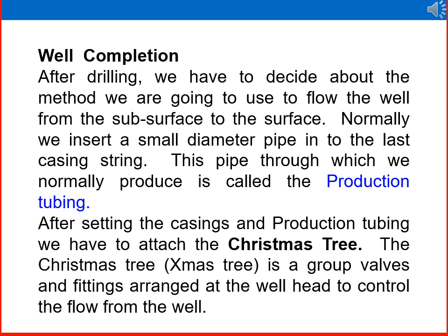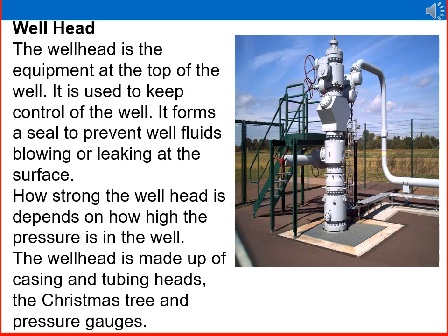The Christmas tree — sometimes called the Xmas tree — is a group of valves and fittings arranged at the well head to control the flow from the well. The picture shows a Christmas tree connected to production tubing above the surface, with the tubing going down through the subsurface to the reservoir. The well head is the equipment at the top of the well, used to keep control of the well. It forms a seal to prevent well fluids from blowing or leaking at the surface. Its strength depends on how high the pressure is in the well. The well head is made up of casing head, tubing head, Christmas tree, and pressure gauges.